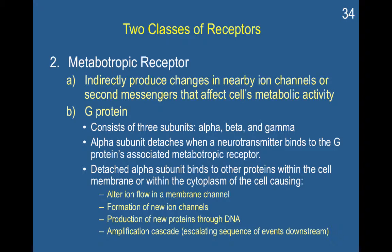The detached alpha can also influence the formation of new ion channels. If a cell wanted to release more neurotransmitters or become more responsive to neurotransmitters, forming new ion channels gives it the potential to let in more sodium or remove more potassium as part of the action potential process. The alpha subunit can also cause downstream effects to travel to other parts of the cell, resulting in the production of new proteins through DNA.